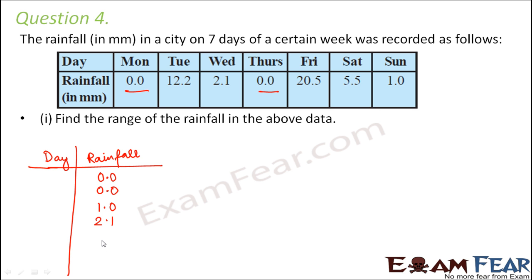Then we have 12.2 and we have 20.5, right? So these 0, 0s are for Monday and Thursday. 1 is for Sunday, 2.1 is for Wednesday, 5.5 is for Saturday, 12.2 for Tuesday, and 20.5 for Friday. So this is how I have organized the data in ascending order.